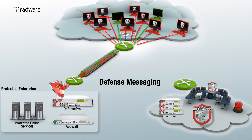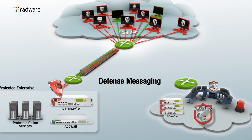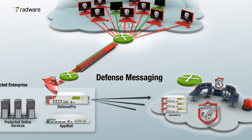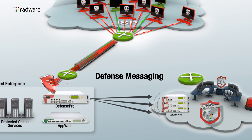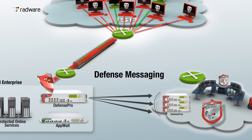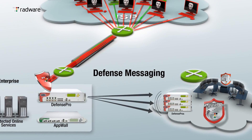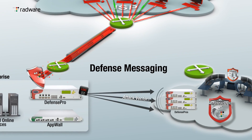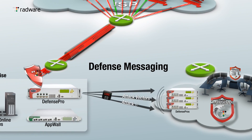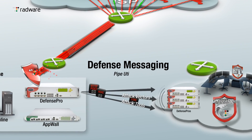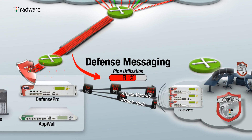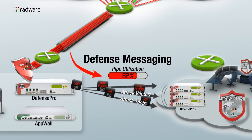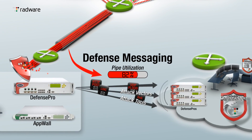Defense messaging between the on-premise Defense Pros and the Defense Pros at the Defense Pipe Cloud Scrubbing Center share essential information regarding the state of the attack, its attack vectors and attack tools. In addition, the on-premise AMS verifies the utilization percentage of the internet pipe.